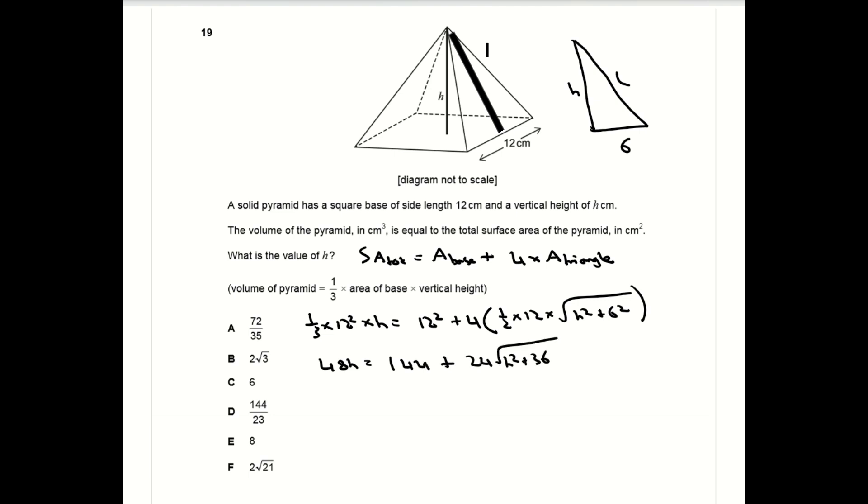It helps to get the area of the triangular face in terms of h using Pythagoras theorem, because l squared from the triangle above is equal to h squared plus six squared. You can then rearrange this to get a quadratic equation in terms of h, which you can solve to give h as eight.